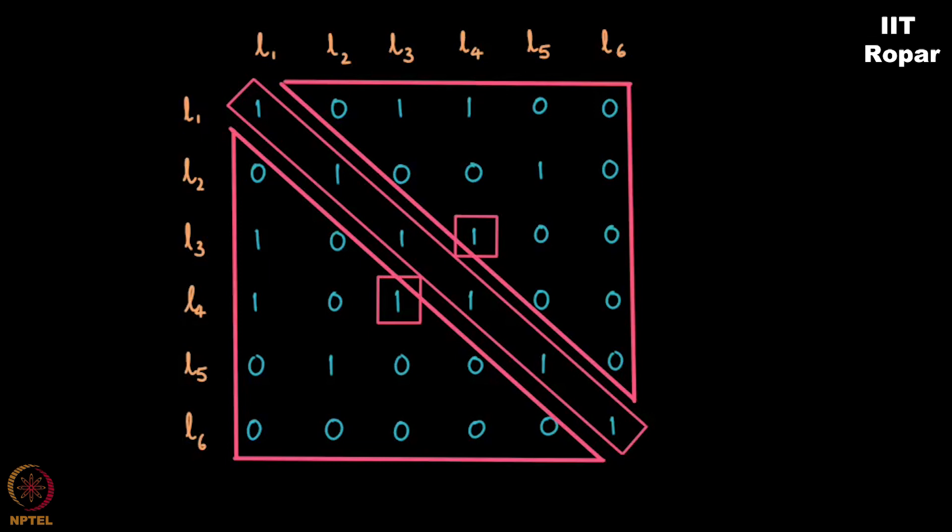Anyways, another small observation which I made just now, that whenever a line is parallel to another line, let's say here L4 is parallel to L1 and L1 is parallel to something else, right L3, then L4 will be parallel to L3, correct?